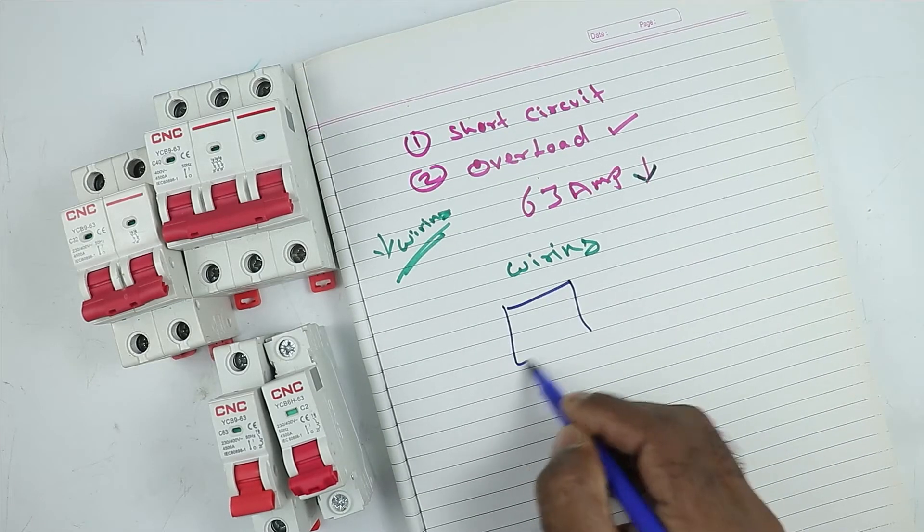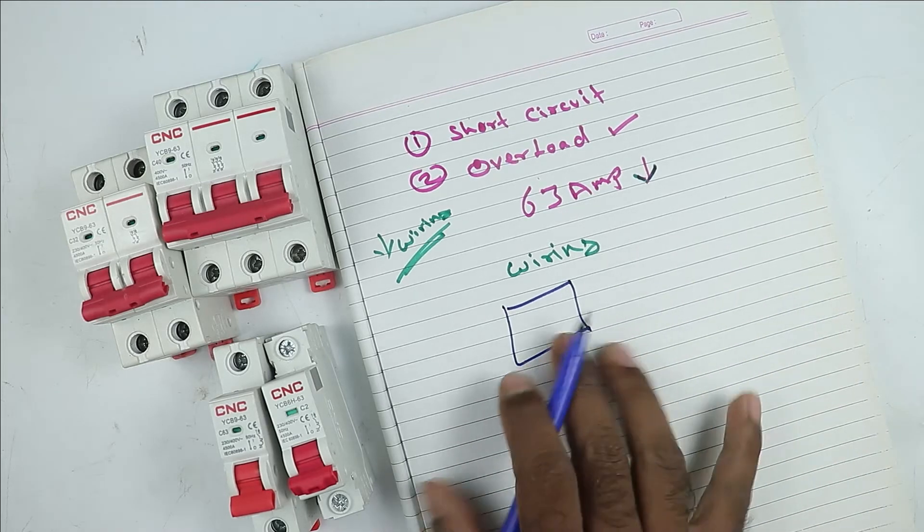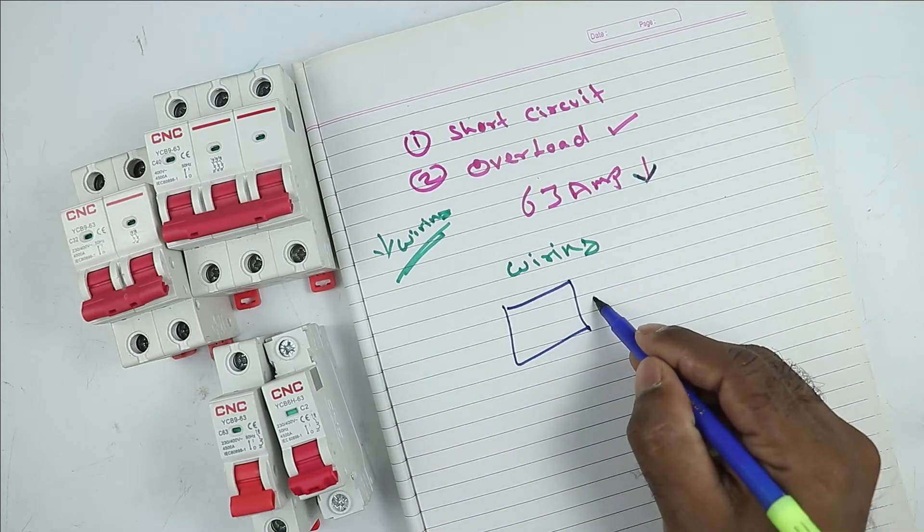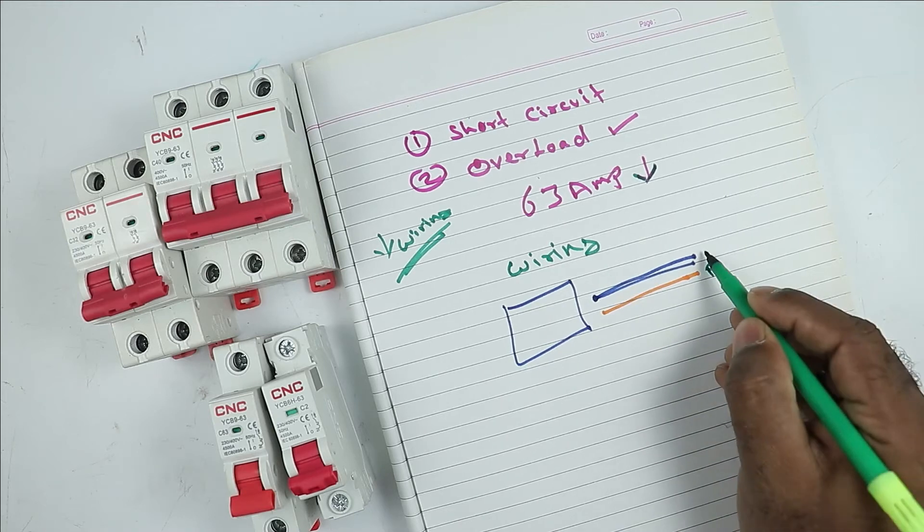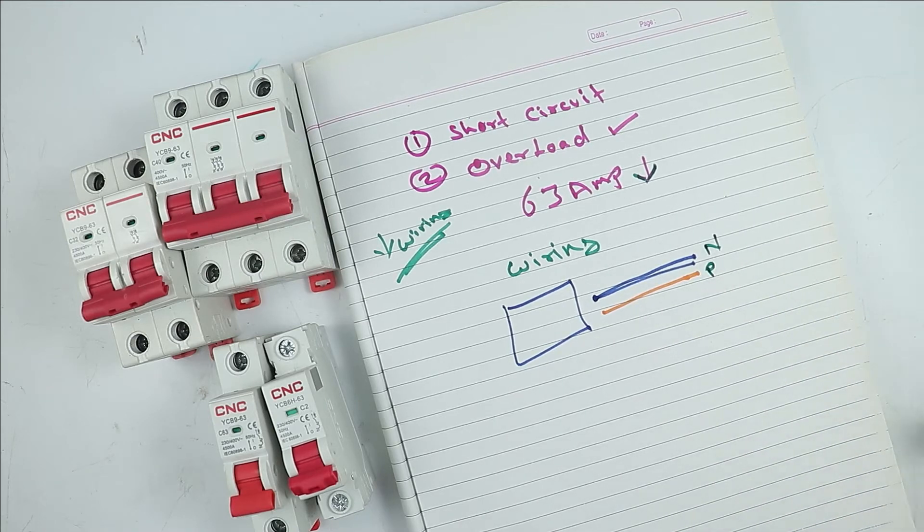When I went to his house and checked the wiring, then I found that wiring done in his home is done only by two wires. One is phase supply wire and another is neutral supply wire.